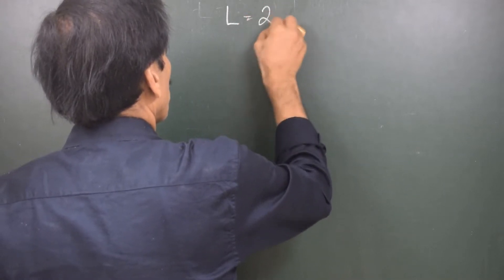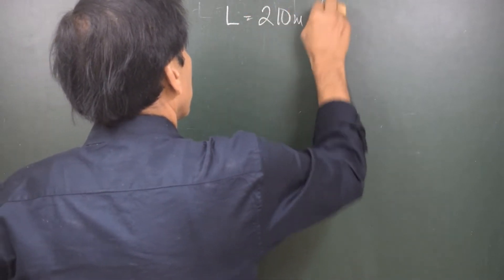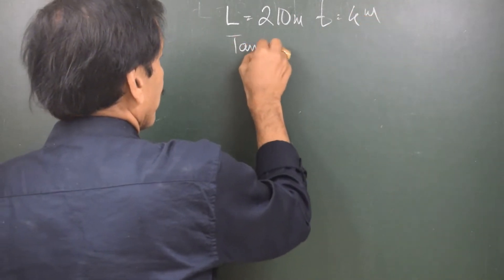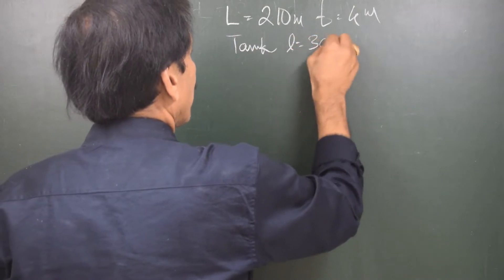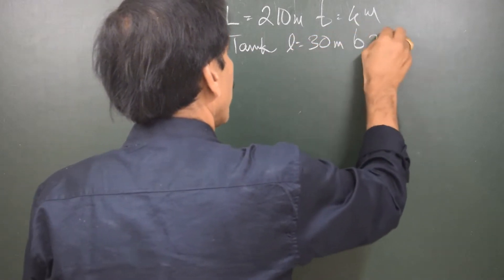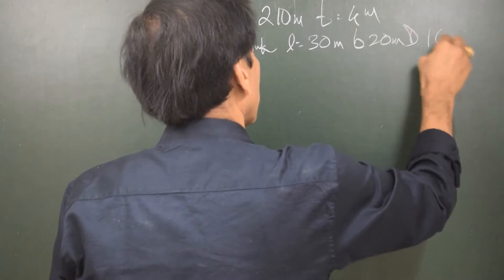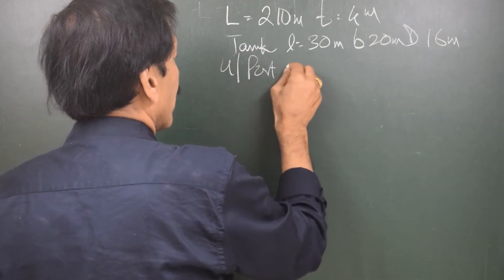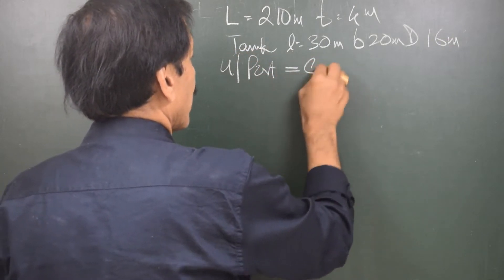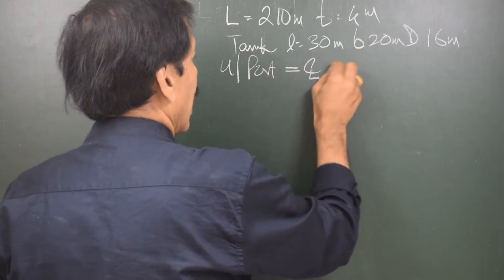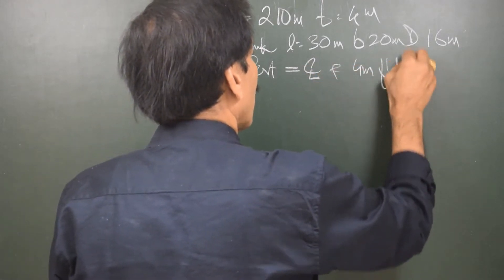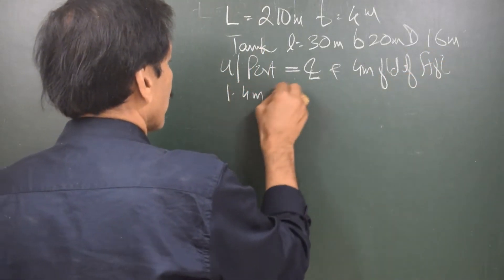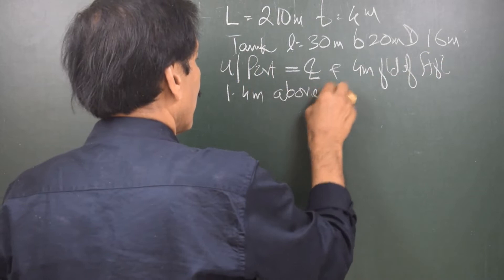The length of the vessel, let us take it as 210 meters; trim as 4 meters. There is a tank whose length is 30 meters, the breadth is 20 meters, and the depth is 16 meters. The ullage port is on the center line, 4 meters forward of the aft bulkhead and 1.4 meters above tank top.